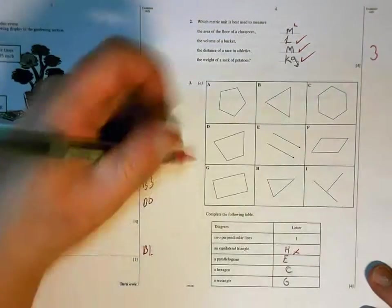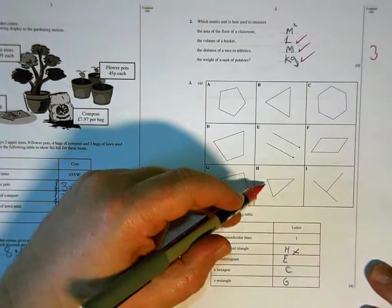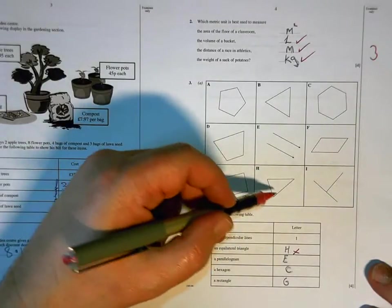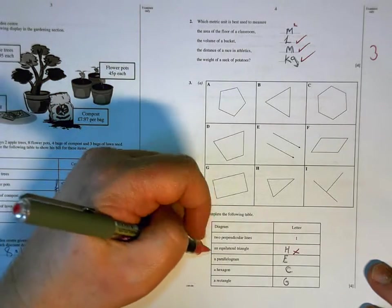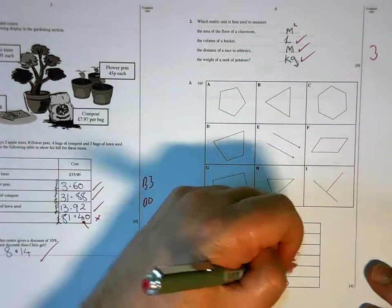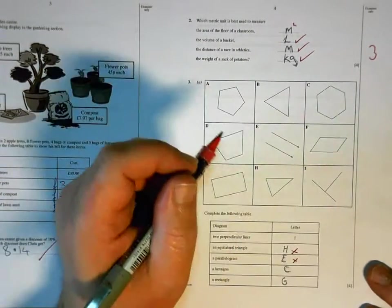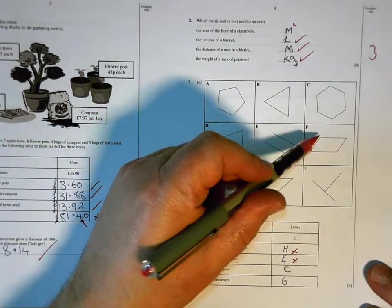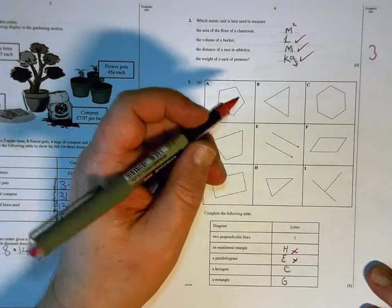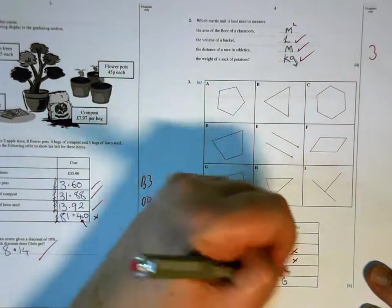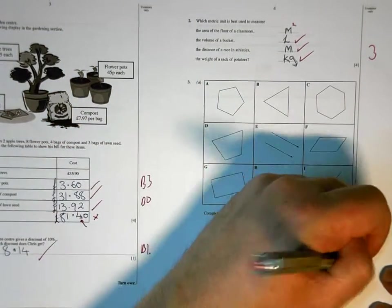An equilateral triangle is not H, H is an isosceles triangle because it's only got two equal sides. The equilateral one is B. Parallelogram is not E, E are just a pair of parallel lines. The parallelogram is F, which is a four-sided shape with two pairs of parallel sides.